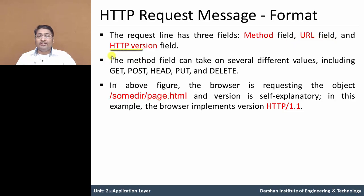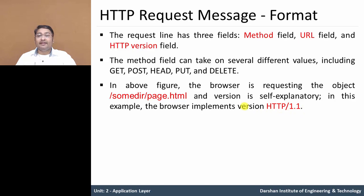The third field is the HTTP version field. HTTP version means it can be persistent or non-persistent. In this example, HTTP version 1.1 means it is a persistent connection, so it is self-explanatory.